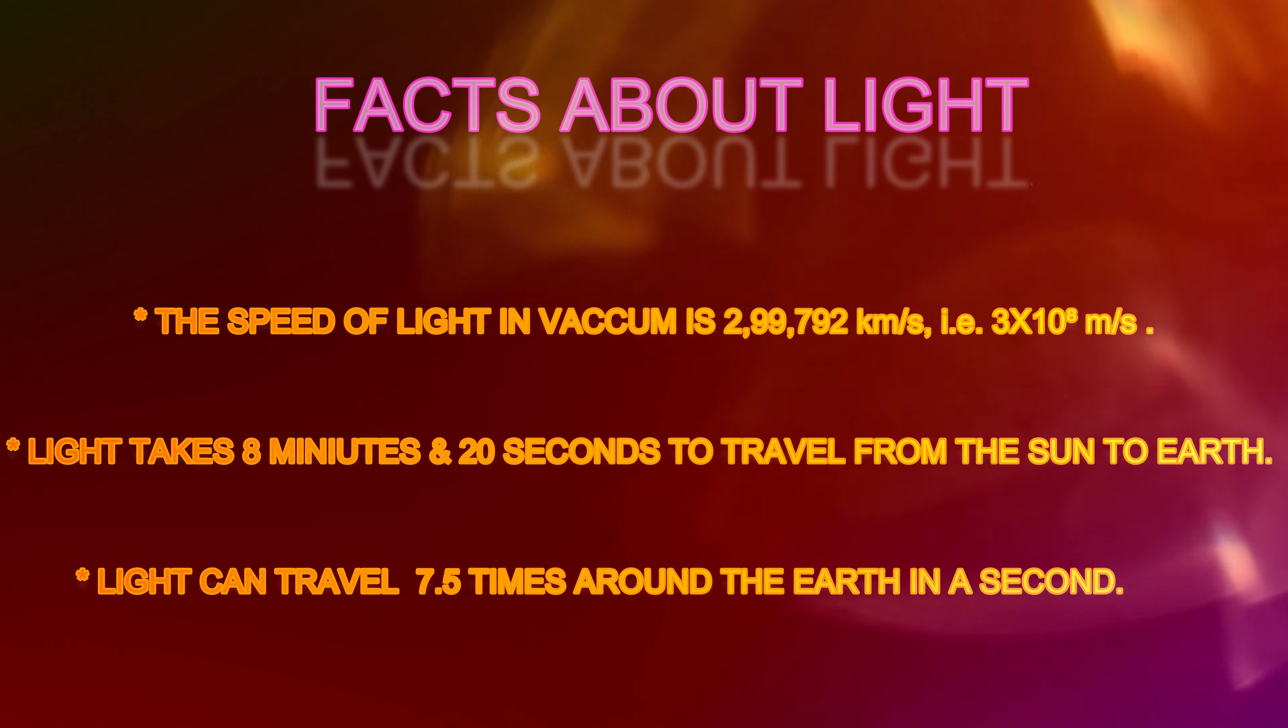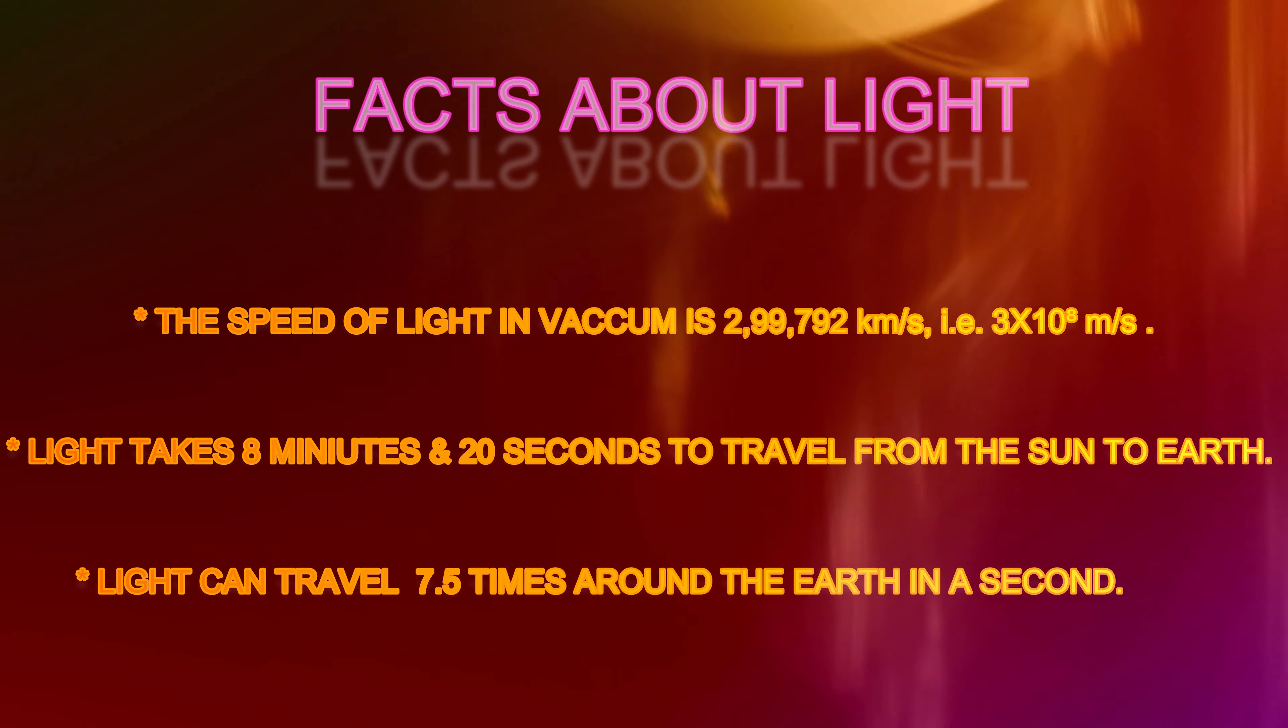Hey guys, welcome to Fun and Stun. Let's start this video with facts about light. The speed of light in vacuum is 299,792 km per second, that is 3 × 10^8 meters per second. Light takes 8 minutes and 20 seconds to travel from sun to earth.